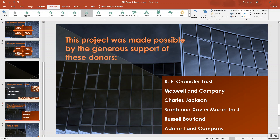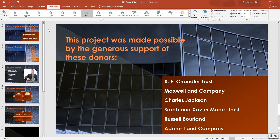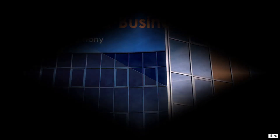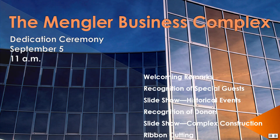Step number eight: use Slideshow view to practice navigation tools, keyboard shortcuts, and blanking slides. Display slide number one and click the Slideshow button on the status bar. Click on Slideshow and click the Next button — you can also hit Enter or another key to advance.